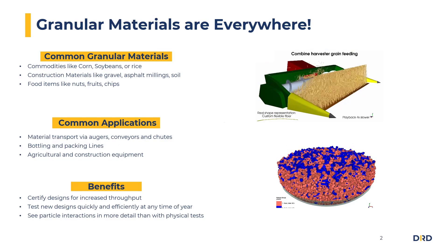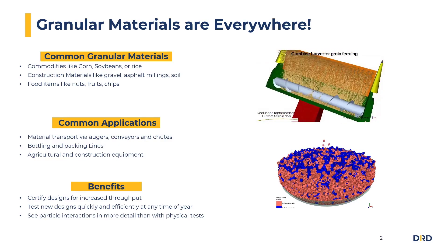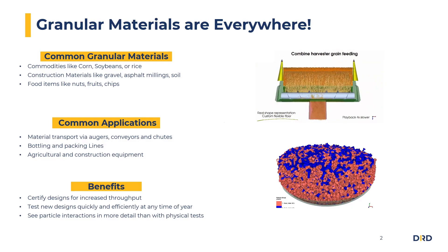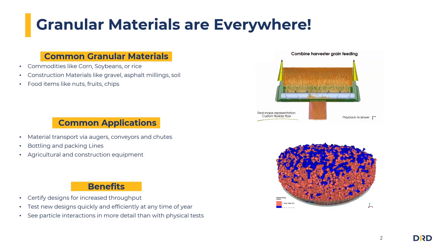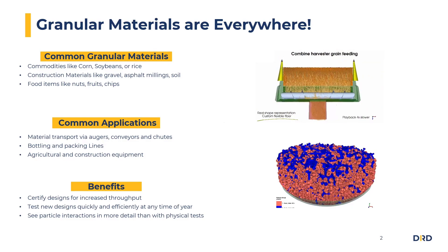Common applications for granular material simulation include material transport via augers, conveyors, and chutes, as well as bottling and packaging lines, and agricultural and construction equipment.